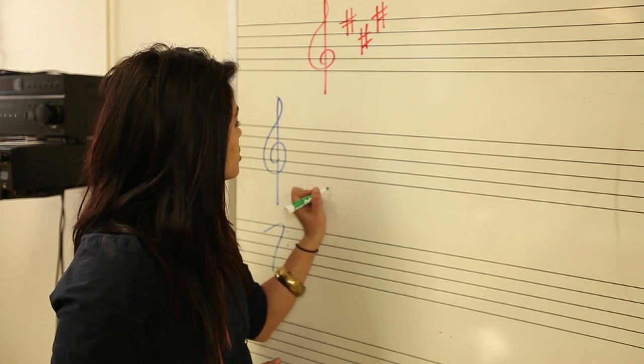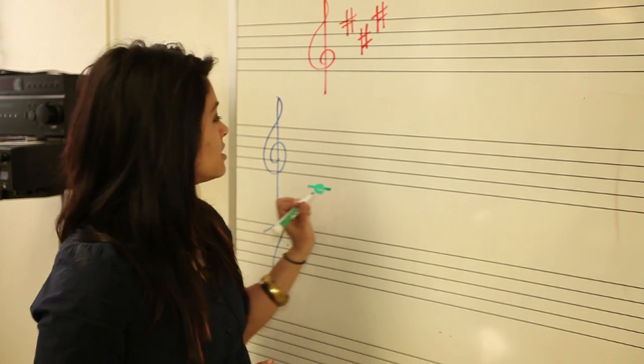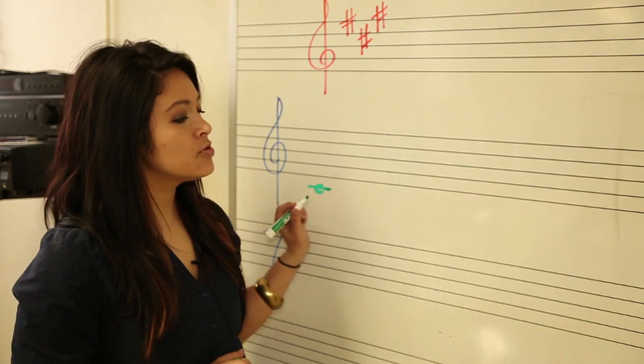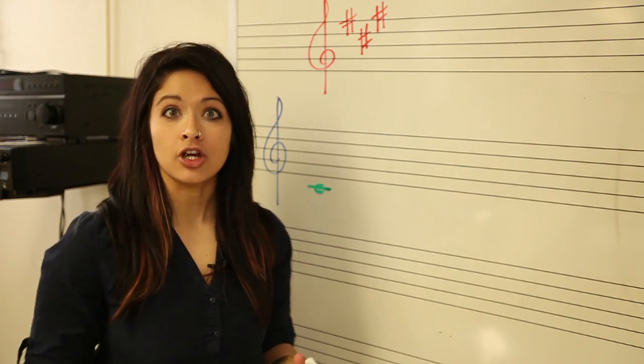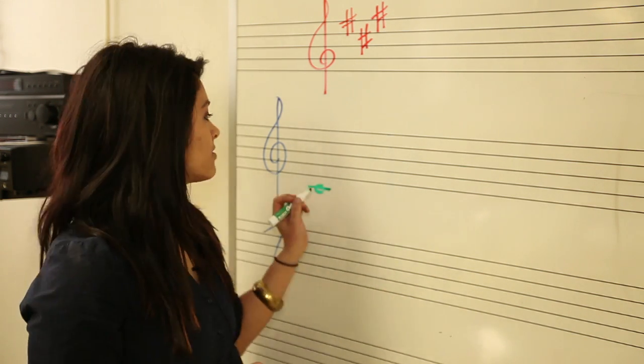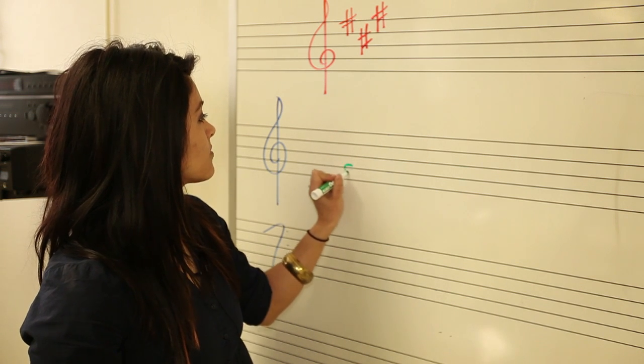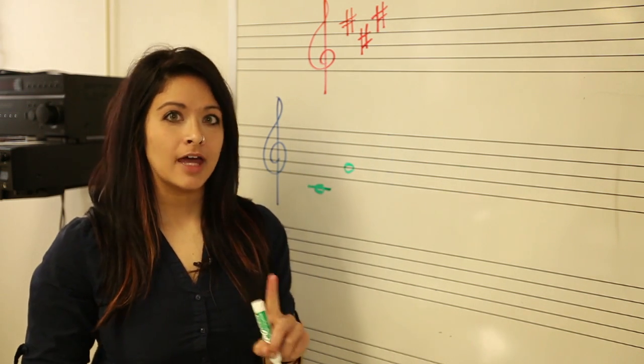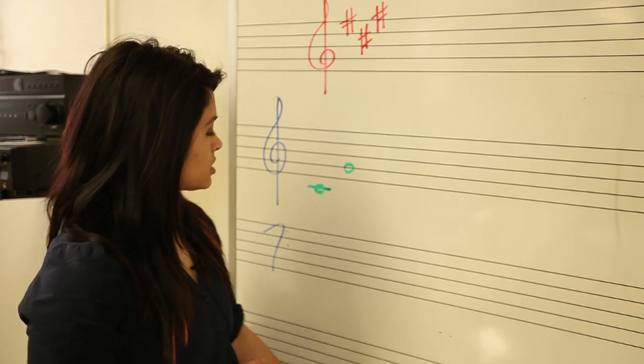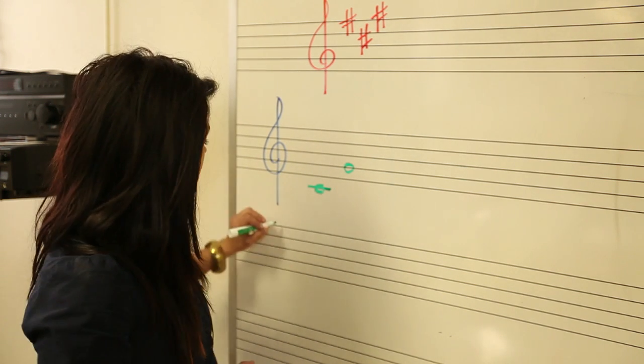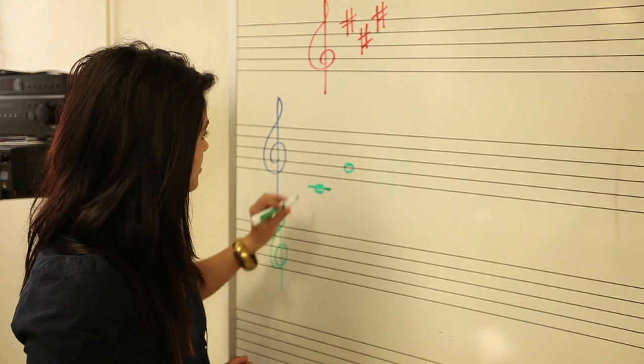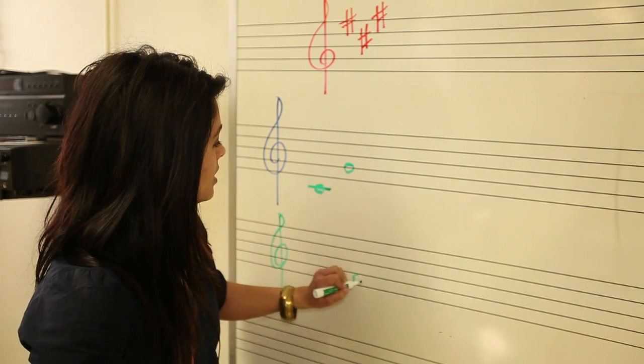When we begin with C major, we begin here at C. To progress to the next key which has one sharp, we will go up one-fifth. That is, we'll go up to G. G major has one sharp, F sharp. I'm going to draw beneath the sharp that's included, F sharp.